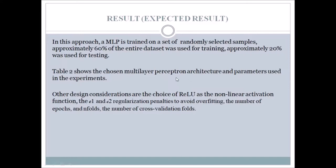Expected results: in this approach, a multilayer perceptron is trained on a set of randomly selected samples. Approximately 60% of the entire dataset is used for training and approximately 20% for testing. Table 2 shows the chosen multilayer perceptron architecture and parameters used in the experiment. Other design considerations include the choice of ReLU as the non-linear activation function, L1 and L2 regularization penalties to avoid overfitting, the number of epochs, and the number of cross-validation folds.